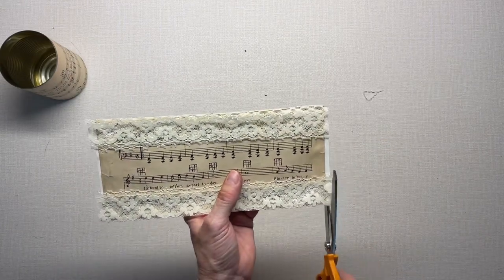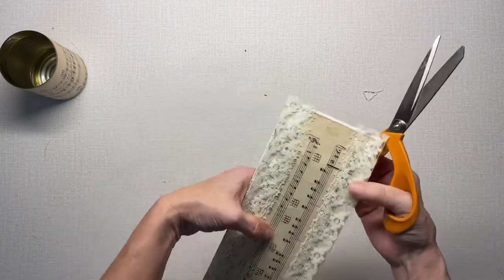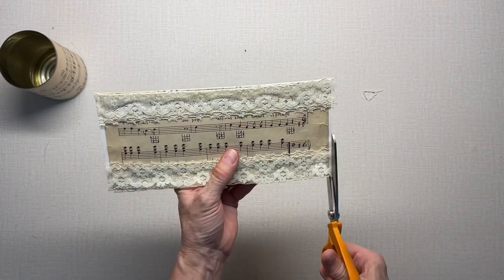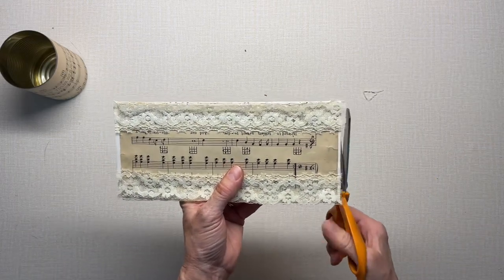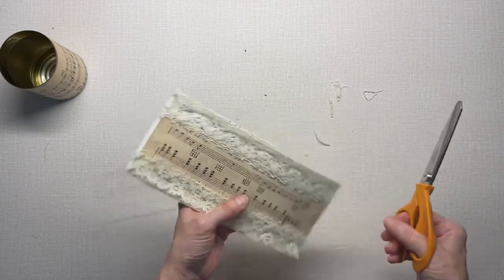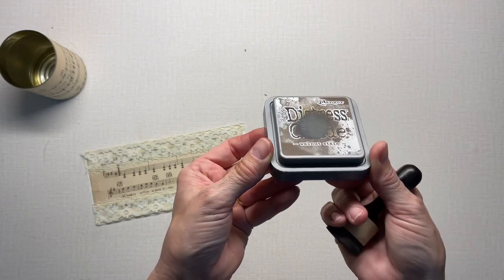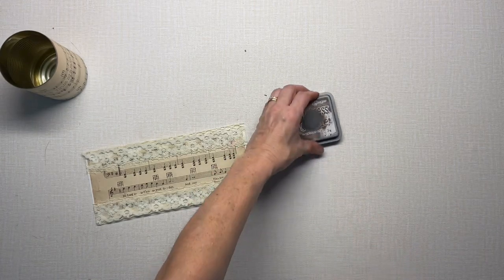I'm just trimming off the excess lace, and then I'm going to use some distress oxide. I'm using the walnut stain and kind of aging the edges in the corners.